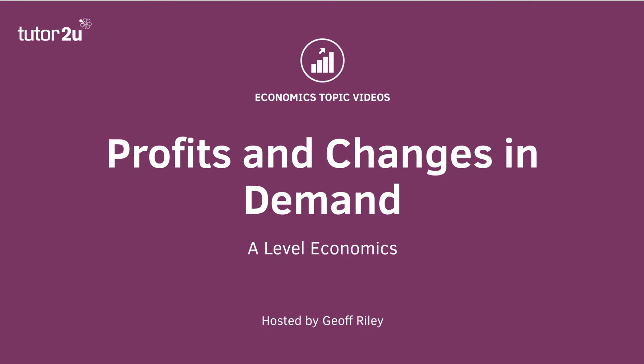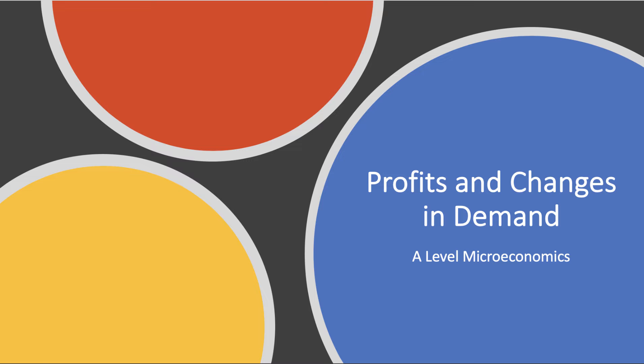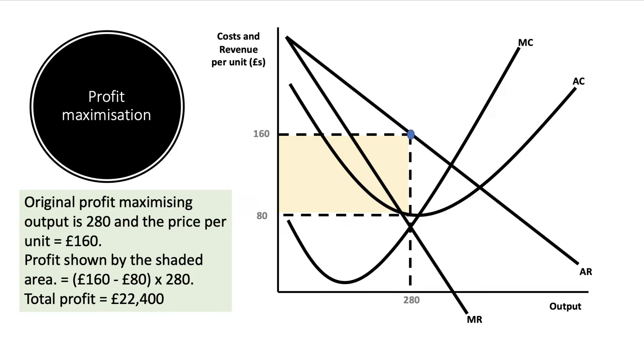Hi there and welcome to a micro video looking at a numerical example of how a shift in demand for a firm can lead to a change in the profit maximizing price, output, and also level of profit.